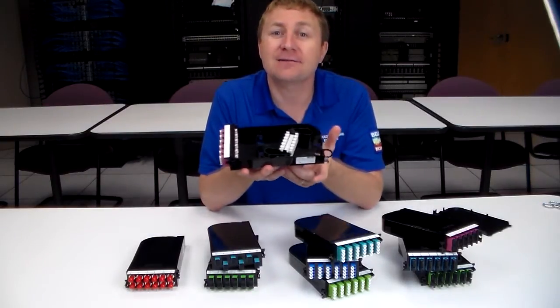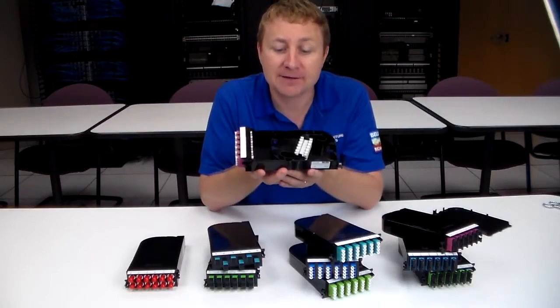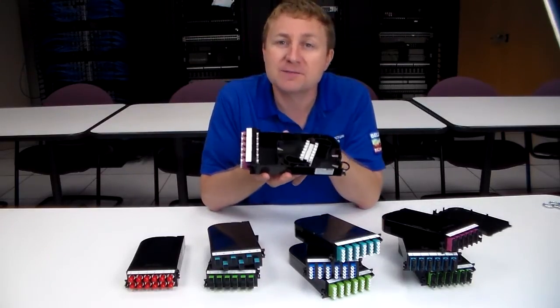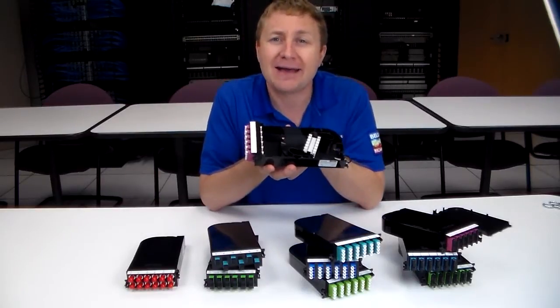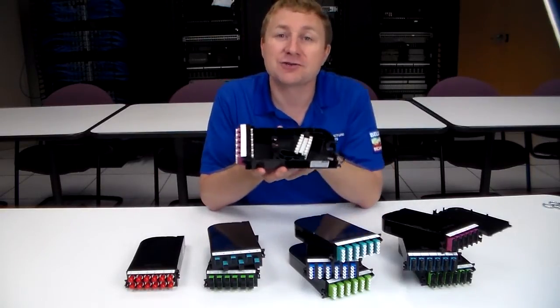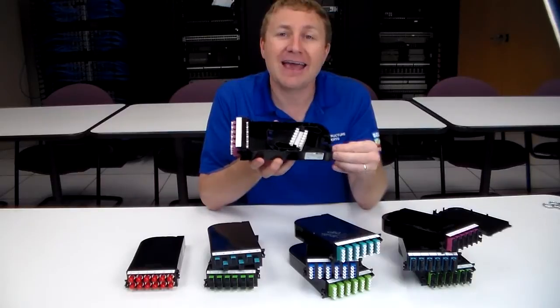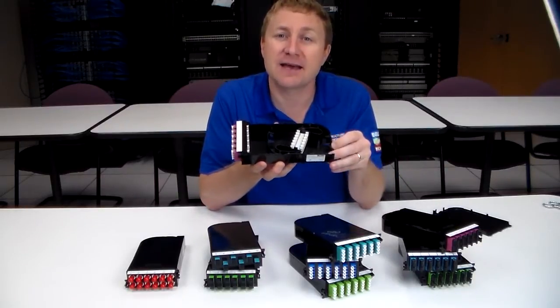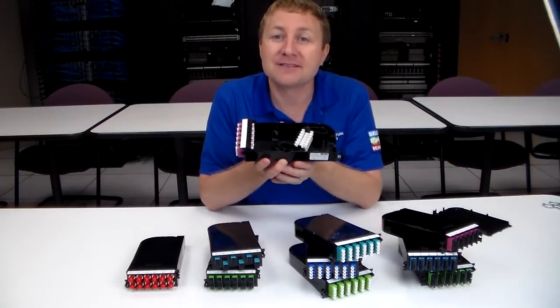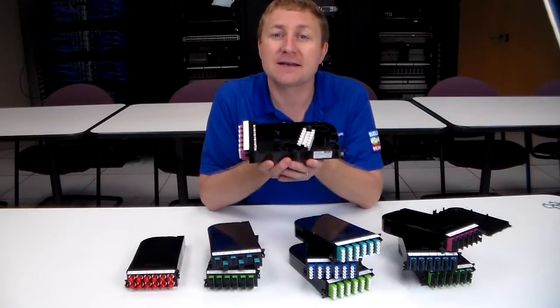If you're using mechanical splice methods like the Brilliance connector you can actually forego the splice holders and just do the termination right on the back of the panel. You'll still be able to manage your slack internally and have a jacketed cable come in from the outside. That will allow us to greatly simplify the complexity of a patch panel.